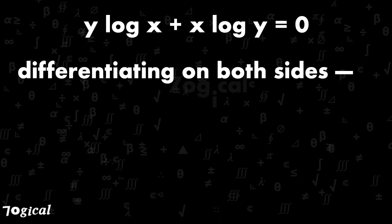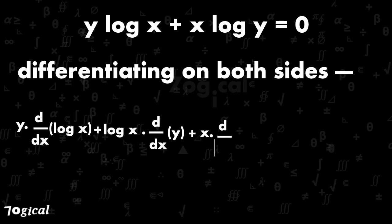Now on differentiating both sides, we get y d by dx log x plus log x d by dx of y plus x d by dx log y plus log y d by dx of x is equals to 0.